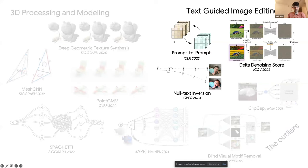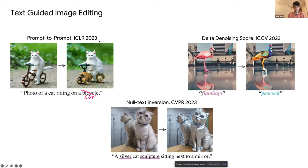In the last year I started to work at Google, first as a student and now full-time. The works I will cover today all use diffusion models for text-guided image editing. I will start with Prompt-to-Prompt, the first work in this series, which we published last year. I will also talk about Null Text Inversion and Delta Denoising Score, presented recently at ICCV.